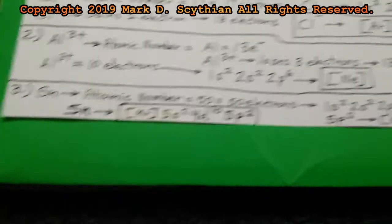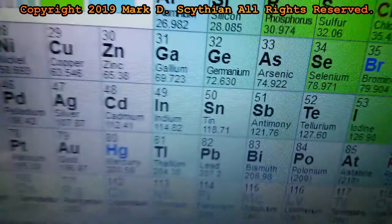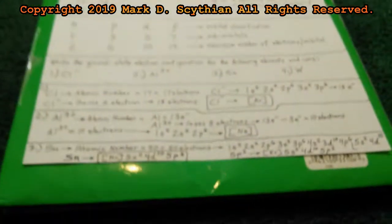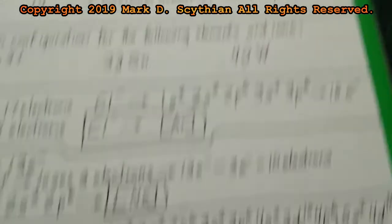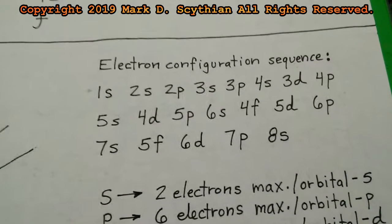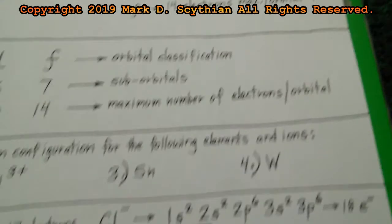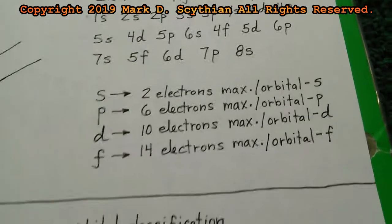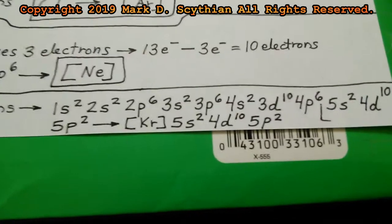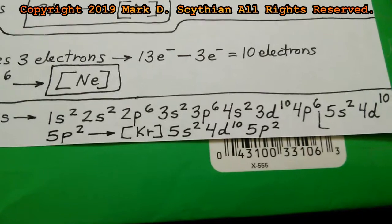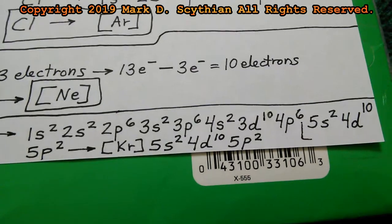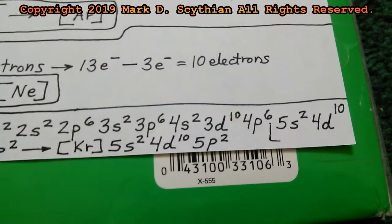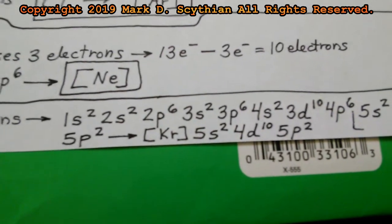Moving on, we have Sn, tin, element 50. It is not an ion, so we write the sequence for 50 electrons: 1s2, 2s2, 2p6 — counts of 2, 4, 10, 12, 18, 20, 30, 36, 38, 48, and then 5p2 for 50. You can put less than the max on each orbital, but you cannot exceed the maximum number of electrons.